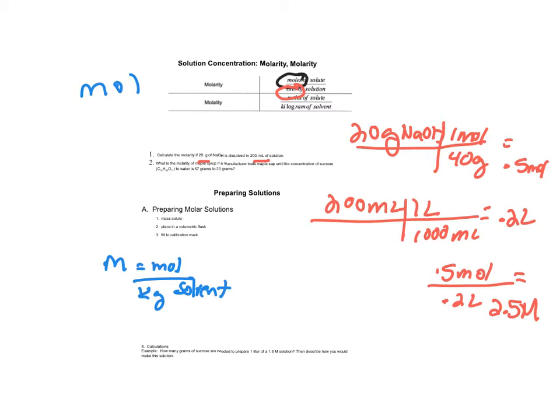Let's take a look at our maple syrup question. I want to know the molality of my maple syrup. I have 67 grams of sucrose. Again, I'll give you the molar mass. That's C12H22O11. So that molar mass is 342.3 grams per one mole. And that equals 0.2 moles of sucrose.